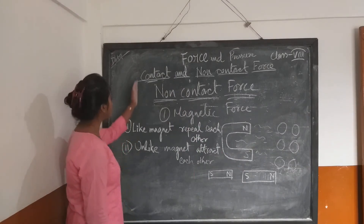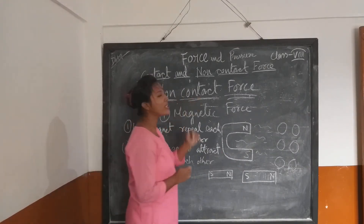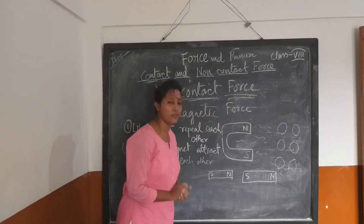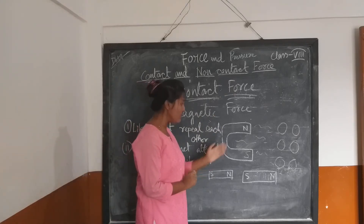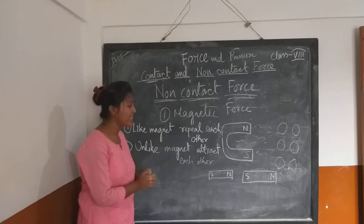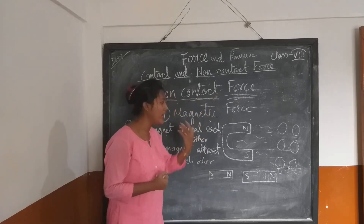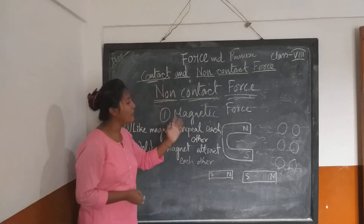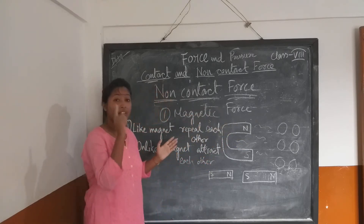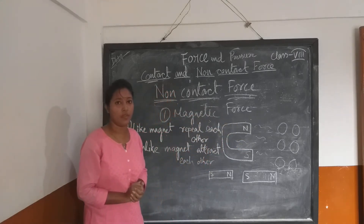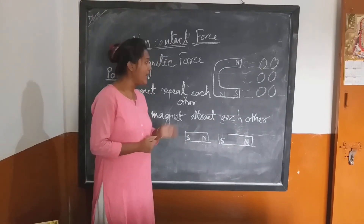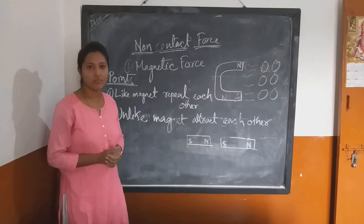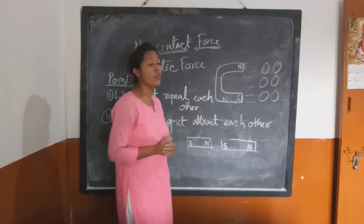Now after contact force, we will learn about non-contact force. An example of non-contact force is magnetic force. Is it necessary to place one magnet directly in contact with another object for it to act? No — from far away also, one magnet can attract an object if the object has magnetic properties. There is interaction but no direct contact.